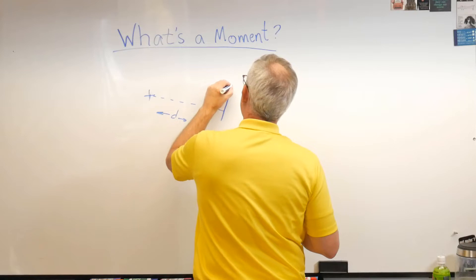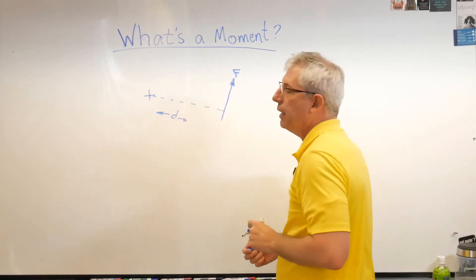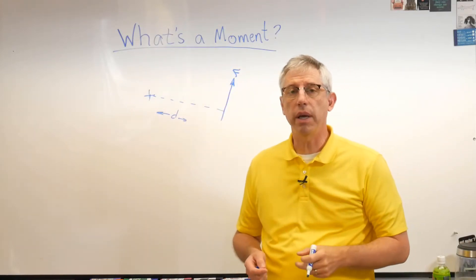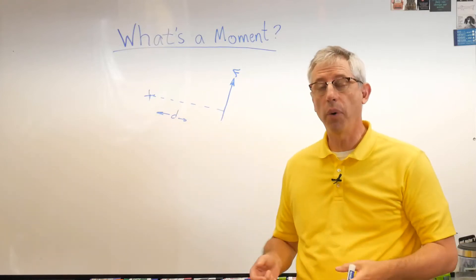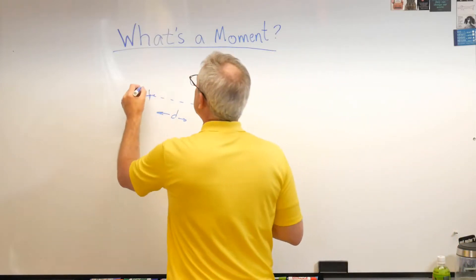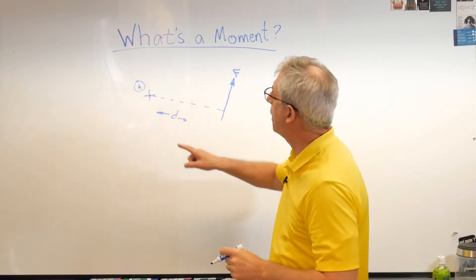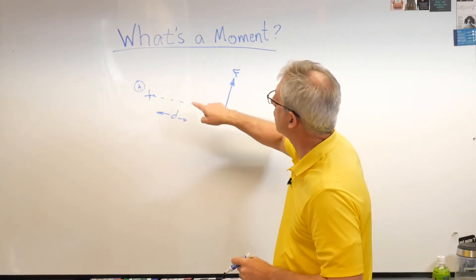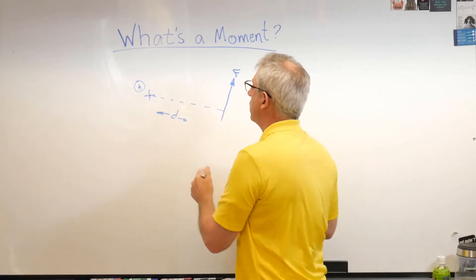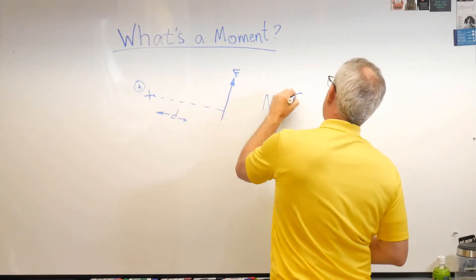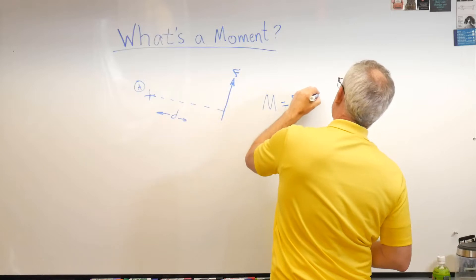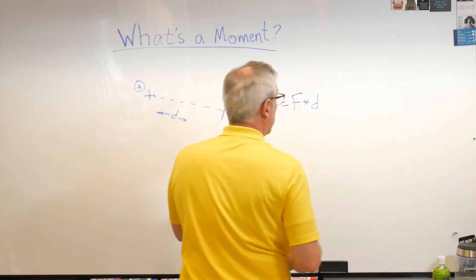And then there's a force acting at that distance, F. Now a moment only makes sense if you have some point about which to calculate it. We'll call that point A. So about point A, that force acting at that distance makes a moment. Moment is just force times distance, that's all it is.